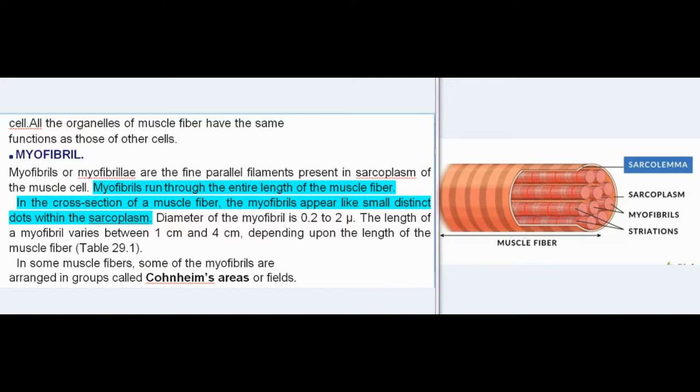Myofibril: Myofibrils or myofibrillae are the fine parallel filaments present in sarcoplasm of the muscle cell. Myofibrils run through the entire length of the muscle fiber. In the cross section of a muscle fiber, the myofibrils appear like small distinct dots within the sarcoplasm. Diameter of the myofibril is 0.2 to 2 microns. The length of a myofibril varies between 1 cm and 4 cm, depending upon the length of the muscle fiber, Table 29.1. In some muscle fibers, some of the myofibrils are arranged in groups called Cohnheim's areas or fields.